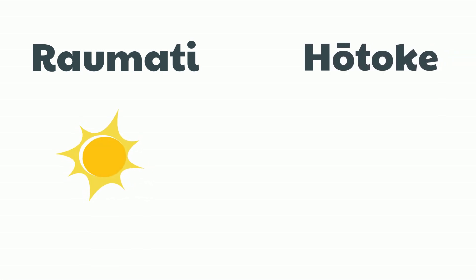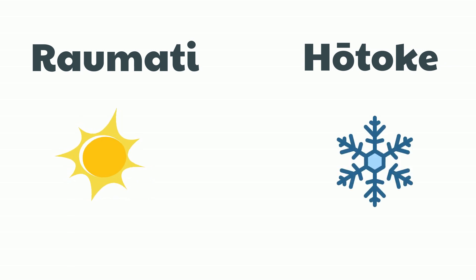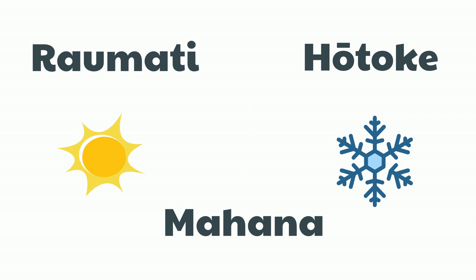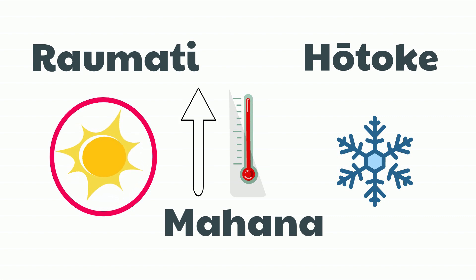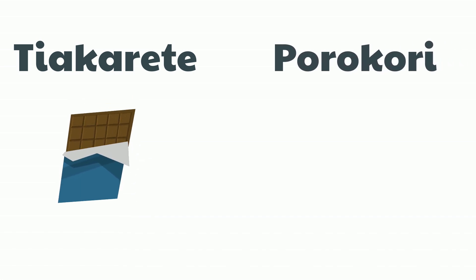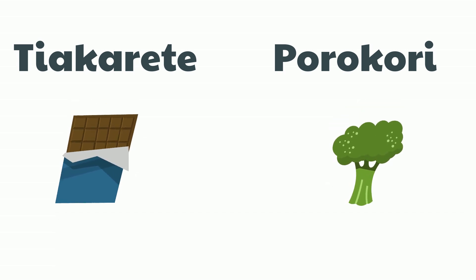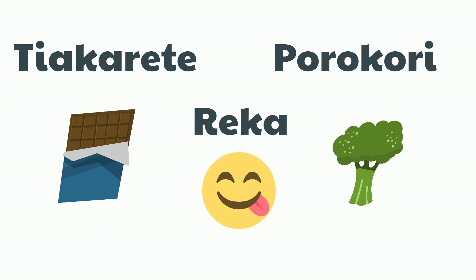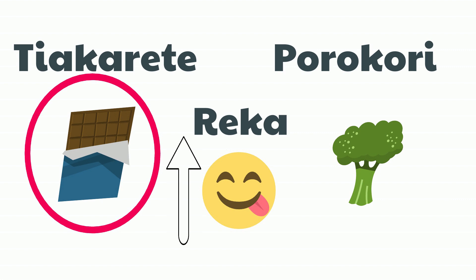Rāumati means summer. Hōtoke means winter. Māhana means warm. How do you say 'Summer is warmer than winter'? He māhana ake te rāumati i te hōtoke. Tiākarete means chocolate. Porokori means broccoli. Reka means tasty. How do you say 'Chocolate is tastier than broccoli'? He reka ake te tiākarete i te porokori.